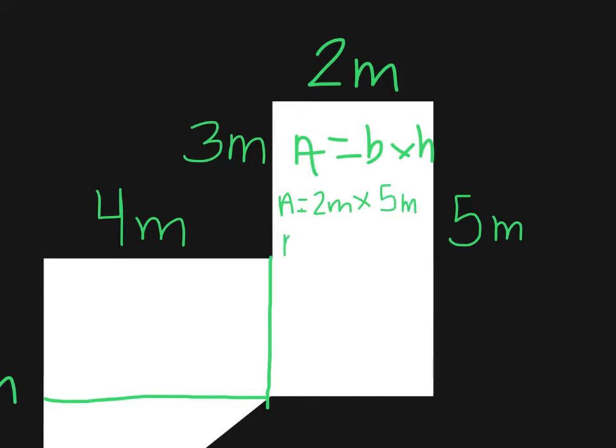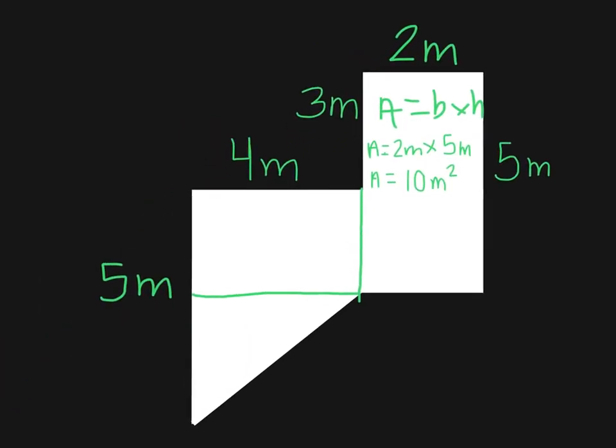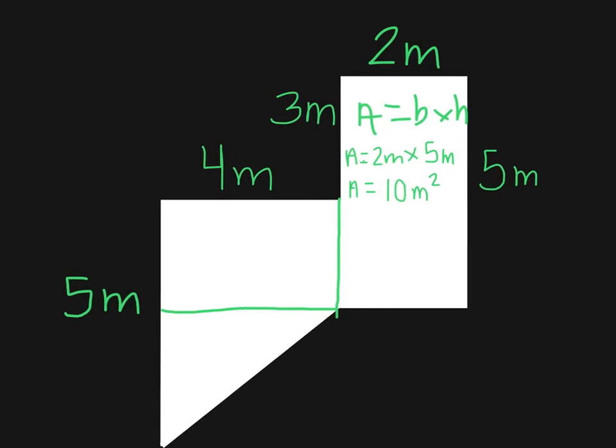So we're going to do our multiplication and our area of this rectangle. One piece of our complex shape is 10 meters squared. Perfect. Let's move on to our next one. Let's focus on maybe our rectangle on the side now.